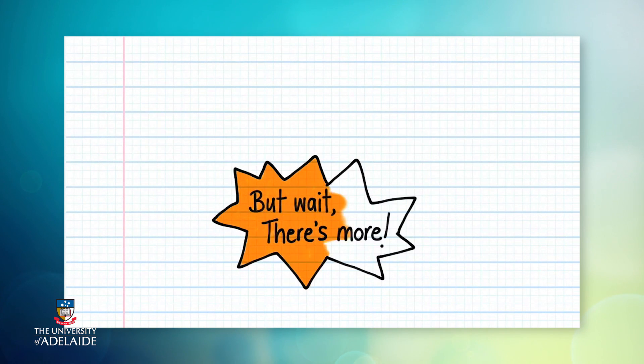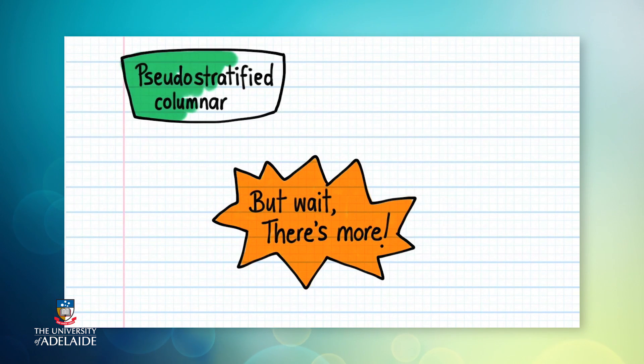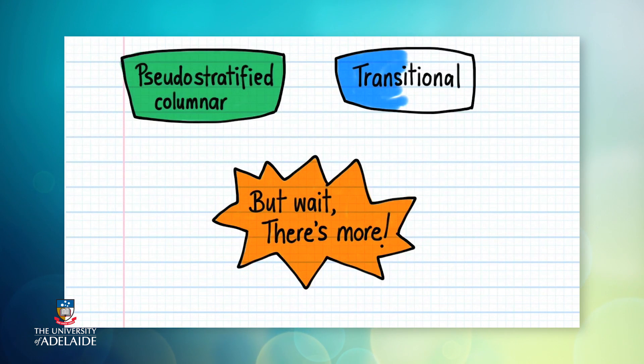But wait, there's more. Our bodies have two other very special types of epithelium, which I haven't yet mentioned. These are pseudostratified columnar epithelium and transitional epithelium.